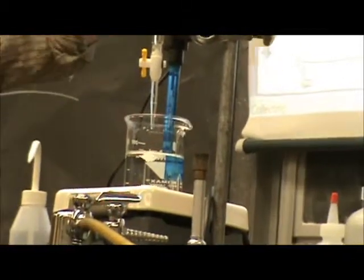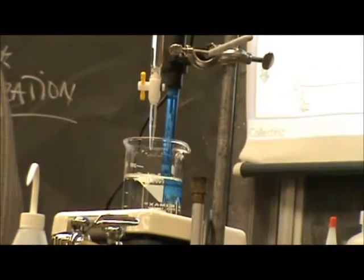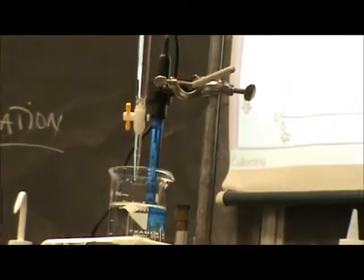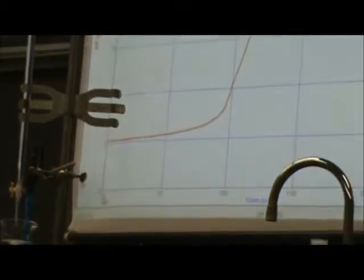As it passes through a pH of seven, the curve is almost vertical. The only reason this doesn't show that extreme slope is because there's a delay in the response time of the pH probe.